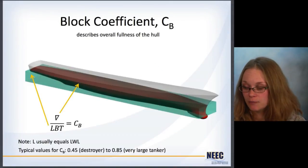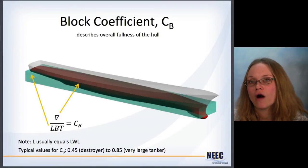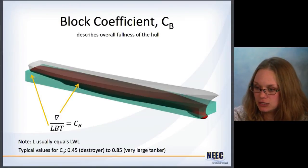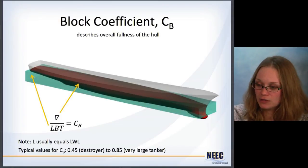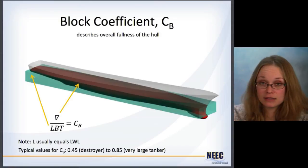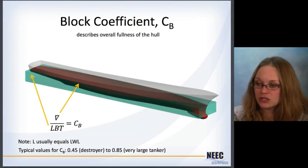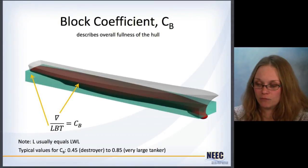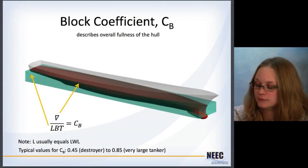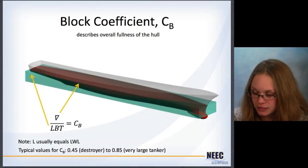Block coefficient is a very important one for comparing different ships. It describes the overall fullness of the hull — it's the actual underwater volume compared to the total volume it could possibly take up based on length times beam times draft. CB equals the underwater volume divided by length times beam times draft, where the length is usually the length on the waterline. For a destroyer concerned with speed and performance, it's going to have a finer hull, so a lower block coefficient. For a very large tanker trying to haul a bunch of cargo, it will have a much fuller hull, meaning a higher block coefficient. This one number can compare hulls that are very complicated and look very differently.